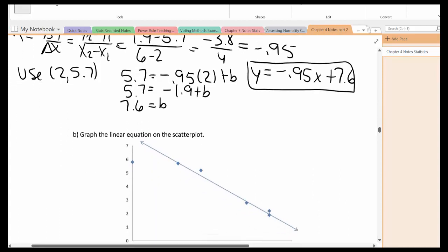Part b, I plotted the points and I put in the line that we just determined here. Does the line perfectly fit all the data? Of course not. We only use two of the ordered pairs to come up with a particular line.